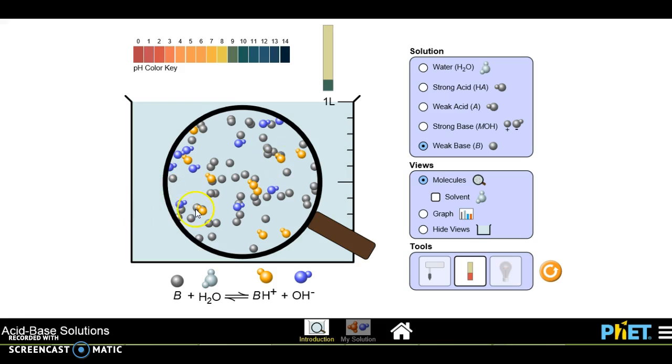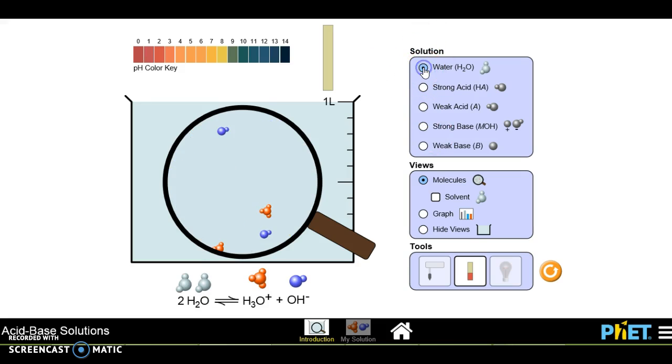You can see there are many options here. If you click the water, you can see the water molecules, then strong acids, then weak acid.